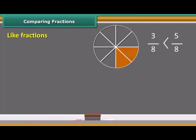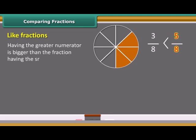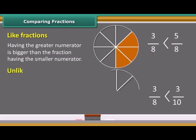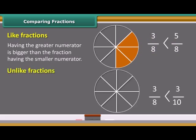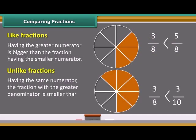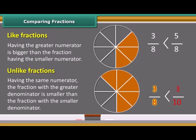In like fractions, the fraction having the greater numerator is bigger than the fraction having the smaller numerator. In the case of unlike fractions having the same numerator, the fraction with the greater denominator is smaller than the fraction with the smaller denominator.